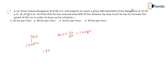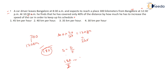He has 180 km remaining and must cover it from 10:30 AM to 12:30 PM — that is, in 2 hours. Using speed = distance / time: required speed = 180/2 = 90 kilometers per hour. So he needs to travel at 90 km/hr to reach on schedule.